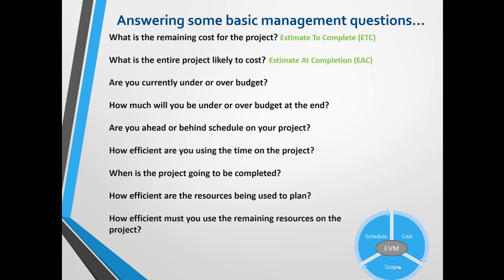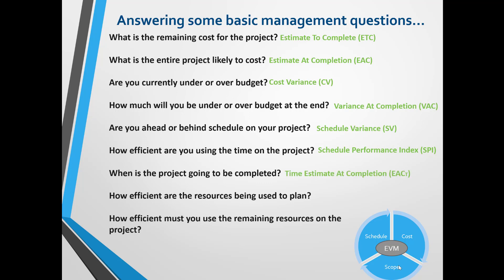Are you currently under or over budget? This is answered using Cost Variance. How much will you be under or over budget at the end? Answer this using Variance at Completion. Are you ahead or behind schedule? This is answered with Schedule Variance. How efficient are you using time on the project? Use Schedule Performance Index. When is the project going to be completed? Use Time Estimate at Completion. How efficient are the resources being used? Use Cost Performance Index. And how efficient must you use the remaining resources? Use the To Complete Performance Index (TCPI).